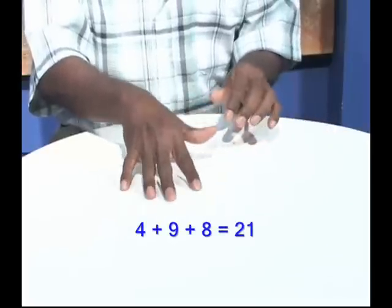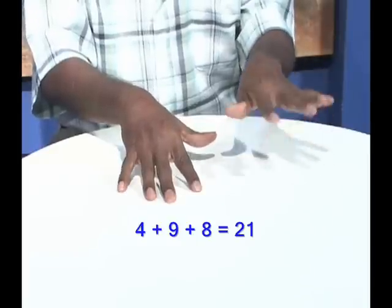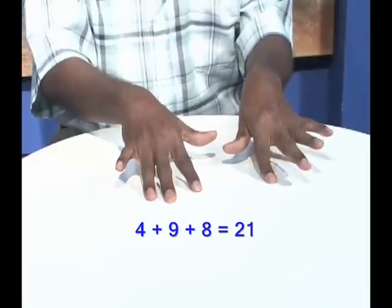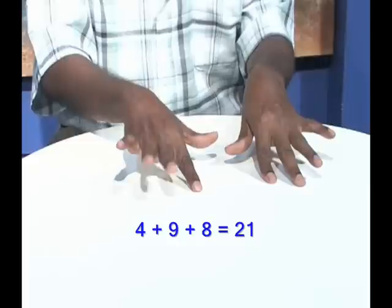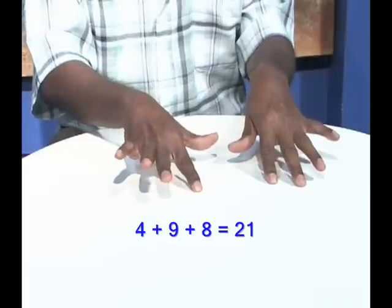So again, 4 plus 9, add 10, take away 1, plus 8, add 10, take away 2. Answer, 21.